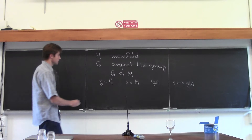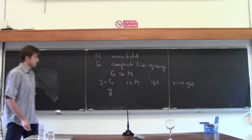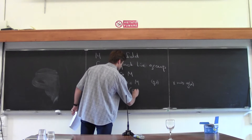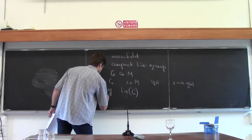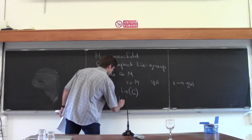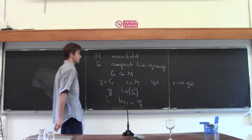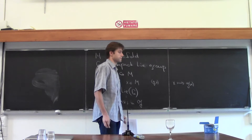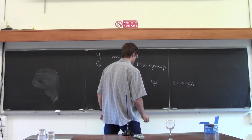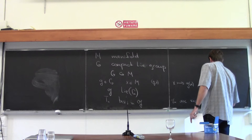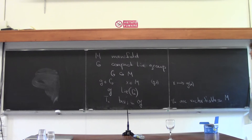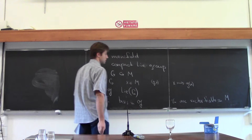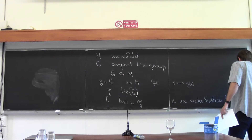Now, to set some more definitions: in the Lie algebra, which I will call g of G — the Lie algebra of the group G — we pick a basis, let me call it T_A, a basis in g. And now, since we are given a group action on the manifold, we have a set of vector fields — one vector field for each basis element — and let me call those vector fields V_A. These are vector fields on M which generate the action by the basis element T_A, the so-called T_A action.